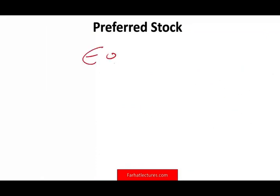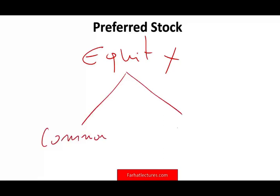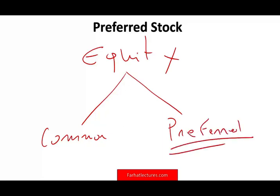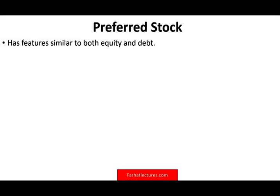Preferred stock is a second type of stock. When we think about equity investments, we have common — which we just talked about — and we have preferred. The preferred stock is treated differently — treated better in some ways. Preferred stock has features similar to both equity and debt, so it acts as if it's debt and equity at the same time. It is still equity from both an accounting and finance perspective. It promises to pay a fixed stream of income each year.